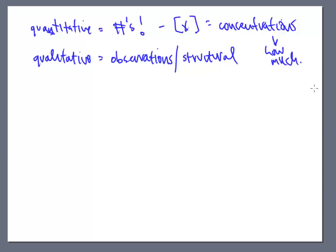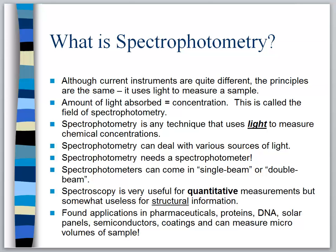Concentration - I get lazy so we use this bracket [X] to represent concentration. UV-Vis finds its home in quantitative work. Biochemistry loves UV-Vis, clinical chemistry loves UV-Vis, but it's also found its home in pharmaceuticals, proteins and DNA, solar panels and semiconductors in the field of electrochemistry and energy.